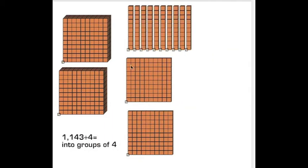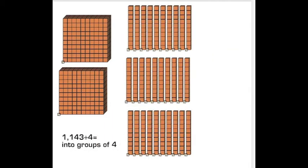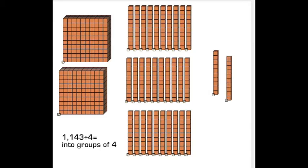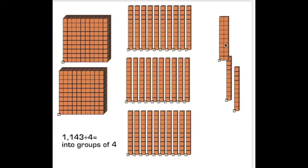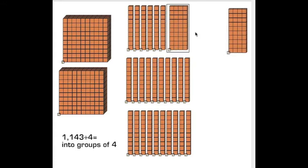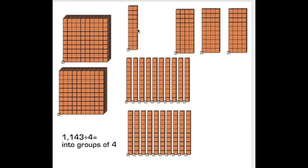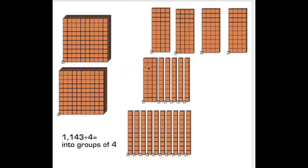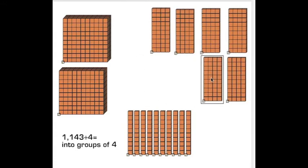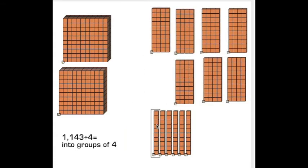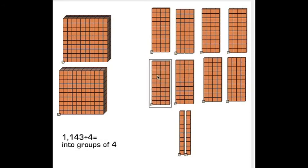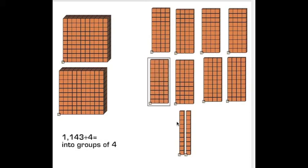I have to bust these 3 hundreds. Now I have 30 tens, and I also have to add the 4 tens I started with. Now I have 34 tens. I'll put these into groups of 4. I'll end up with 8 groups of 4 with 2 remaining.